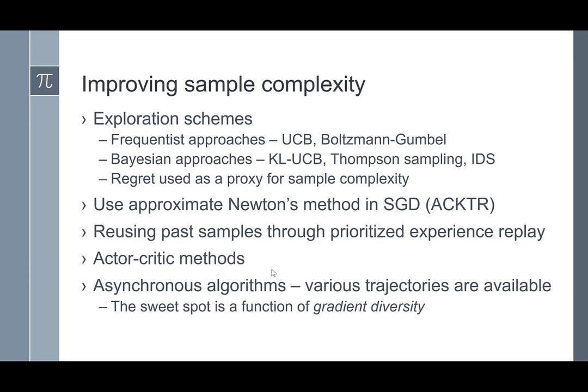Improving sample complexity is one of the most major open areas of reinforcement learning. We first talked about multi-armed bandit problems, exploring different exploration schemes — both frequentist and Bayesian approaches. We used regret as a proxy for measuring sample complexity: a lower regret implies the algorithm can learn an approximately optimal strategy with high probability in fewer samples, while high regret means the sample complexity is very high. Different exploration schemes can improve sample complexity, as we saw firsthand in the context of multi-armed bandits.